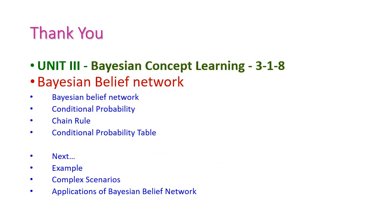In summary, we have seen the Bayesian belief network from the third unit on Bayesian concept learning — what is Bayesian belief network, conditional probability, chain rule, and conditional probability table. In the next class we will see one example for Bayesian belief network, a more complex scenario, and the applications of Bayesian belief network. Thank you.